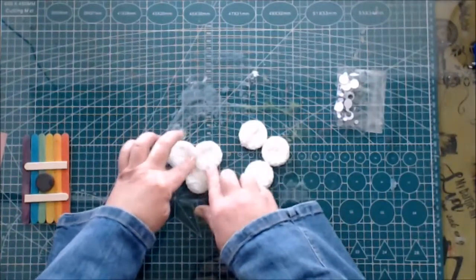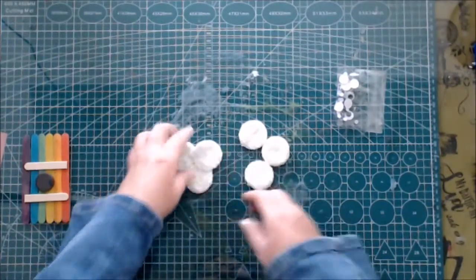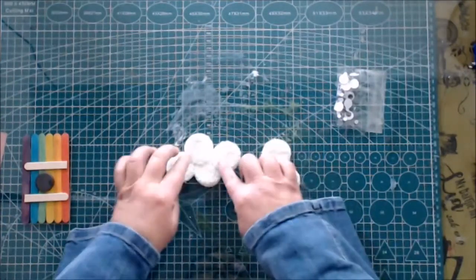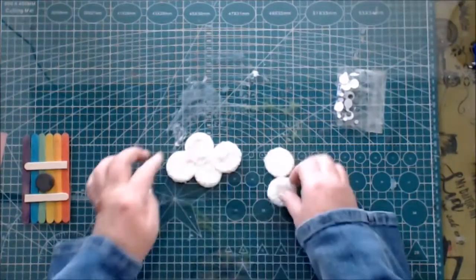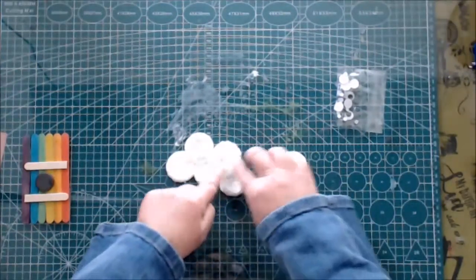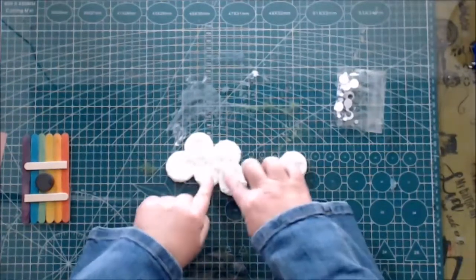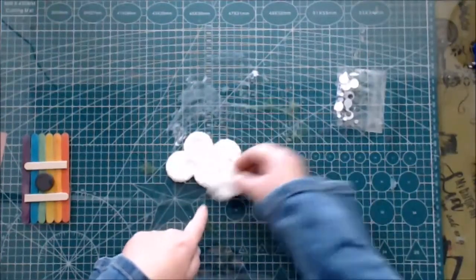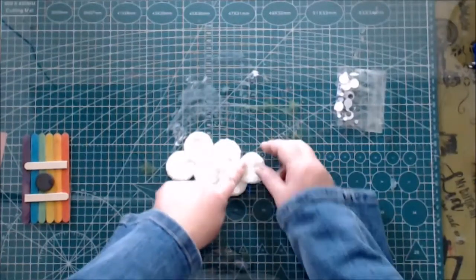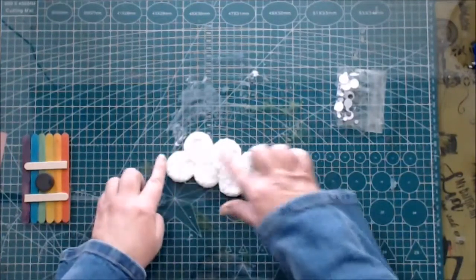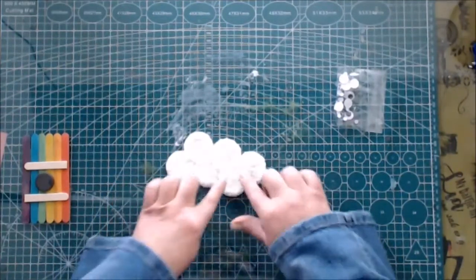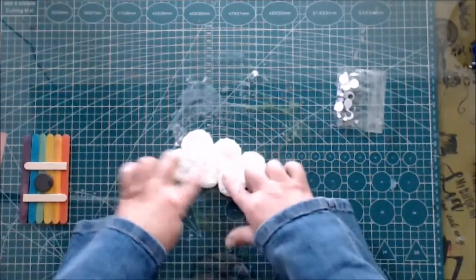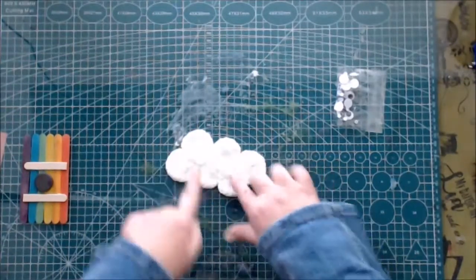The fun foam is quite sticky and it is easy to reshape. All I am doing is I am putting some of these circles together and just pressing on it to form a cloud. It is so easy and so much fun to work with this. You can see that you can reshape it and if there is something that you don't like, you can do it over.